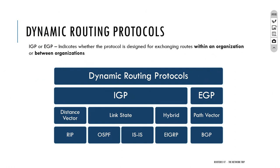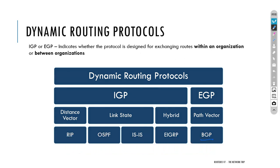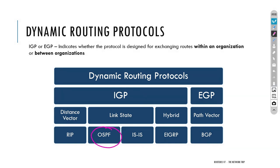There is also a hybrid category with EIGRP, which is supported only on Cisco devices. For external gateway protocols we have BGP, called a path vector protocol — BGP has a list of attributes and selects the best path by evaluating those attributes from top to bottom. We will have a full section for BGP in the channel. For now we focus on OSPF.